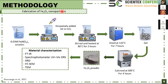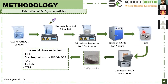For the fabrication of iron oxide nanoparticles: the leaf extract was dropwise added to iron nitrate solution, then stirred and heated at 80°C for two hours. The mixture was then dried and heated at 120°C for seven hours to form a gel phase of iron hydroxide. The gel was then calcined at 600°C for four hours to form iron oxide powder. The material was then characterized using the described techniques.